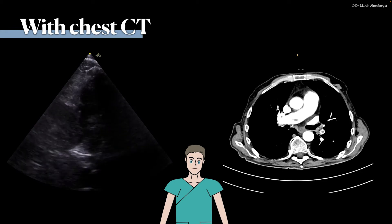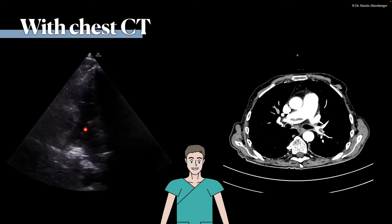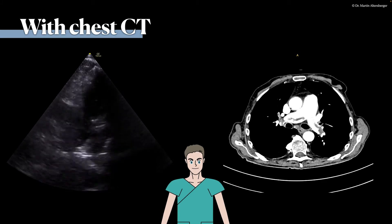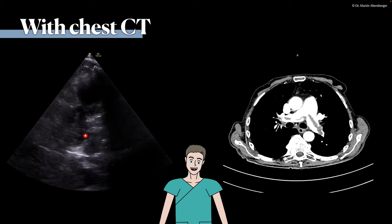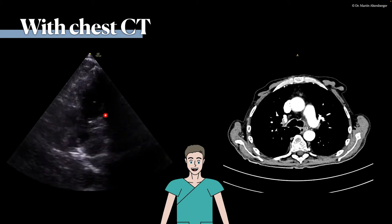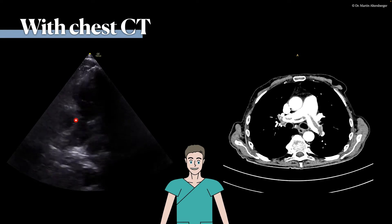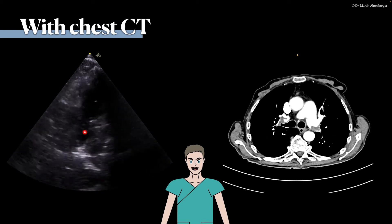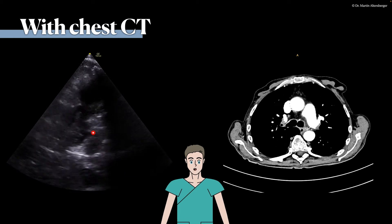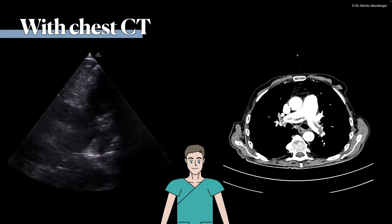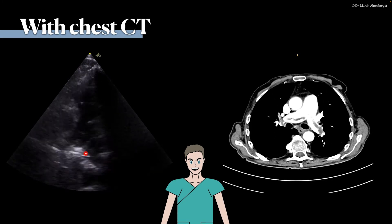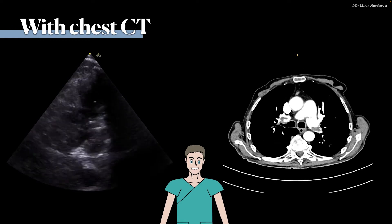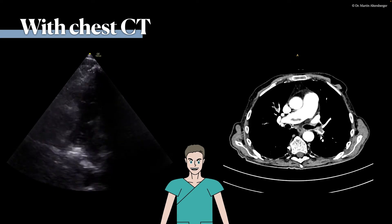Continuing with pulmonary embolism, we have to leave the right heart and move towards the pulmonic valve and the pulmonic trunk. Sometimes in central pulmonary embolism, you will even be able to visualize a thrombus directly. Here we have the pulmonic valve, parts of the pulmonic trunk, and the bifurcation of the pulmonary arteries — the right and left pulmonary arteries. In this case, we do see the thrombus, though it's not always easy to see.